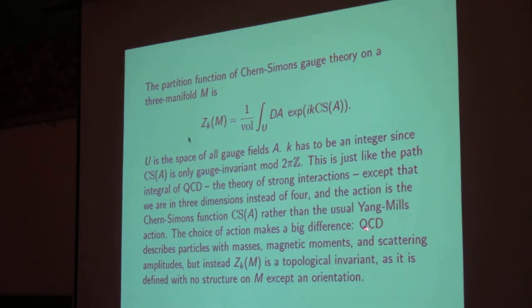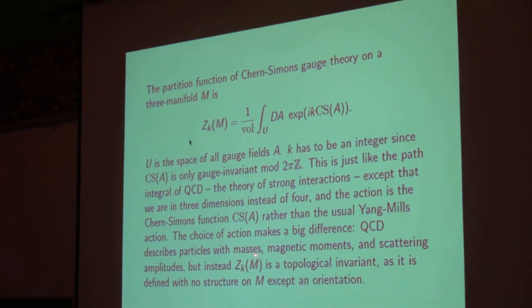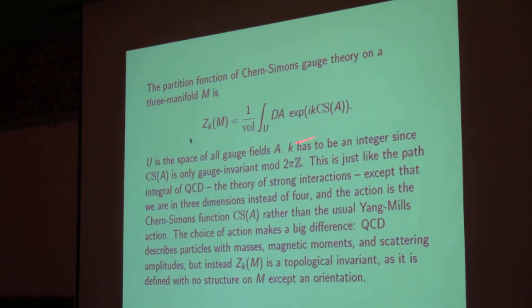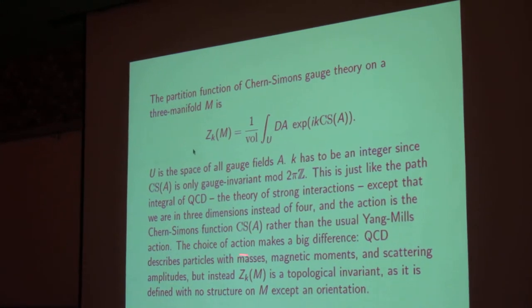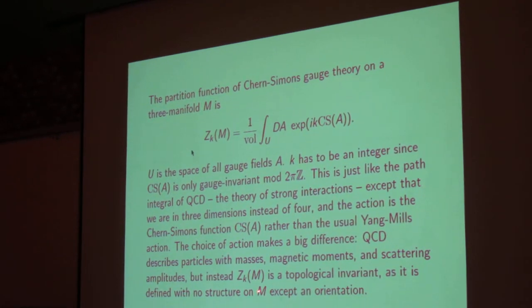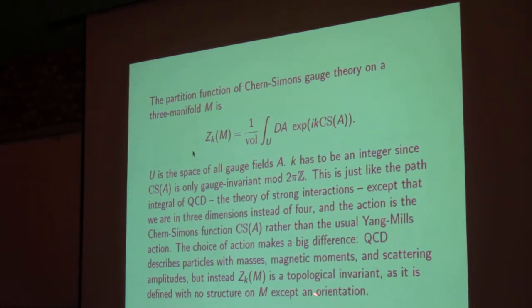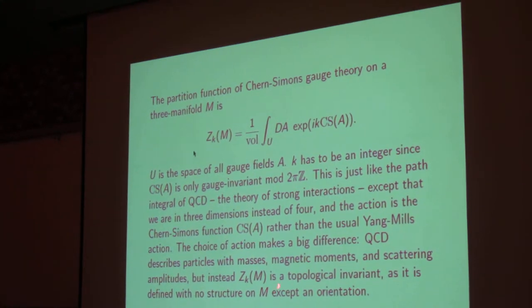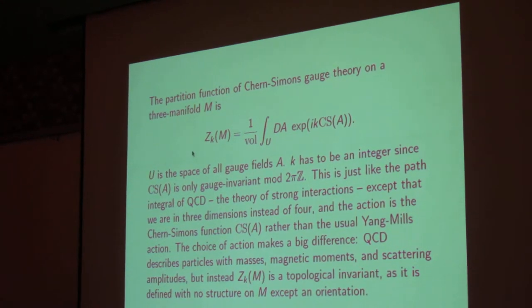So unlike the QCD path integral that gives us particle physics, this analog is going to give us a topological invariant, since it's defined with no structure on the three-manifold M except for the orientation. So this is an invariant of the three-manifold together with an orientation.